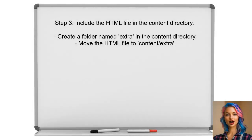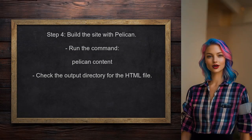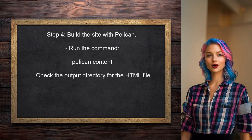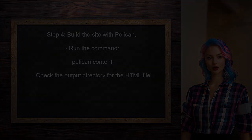After updating the settings, ensure that the HTML file is included in the build process. This can be done by adding the file to the content directory. Finally, build the site again using Pelican. This will ensure that the HTML file is copied to the output directory and is accessible from the root.